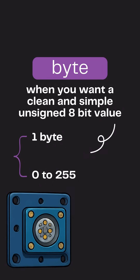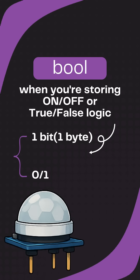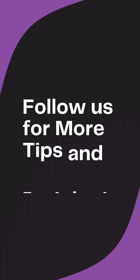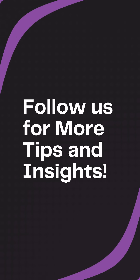Use bool for motion sensors — it gives true or false, simple and fast. Thank you for watching this reel, follow for more such content.